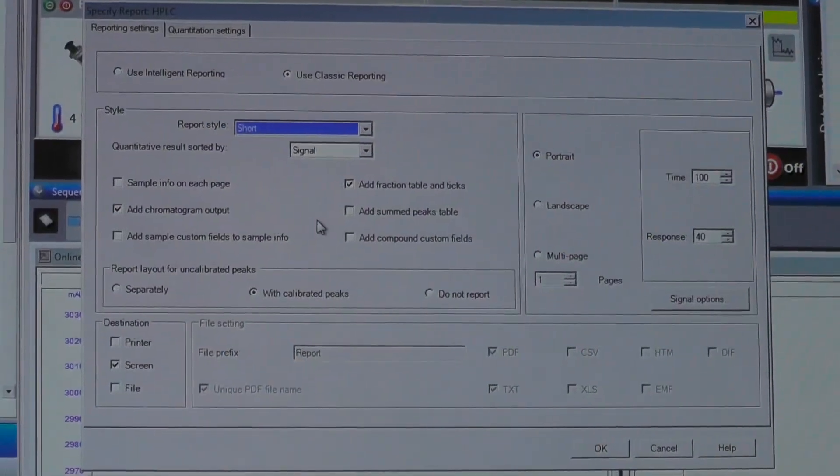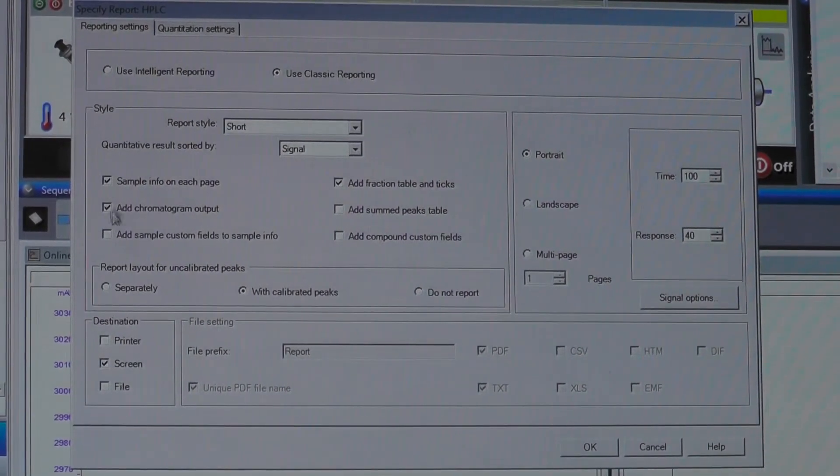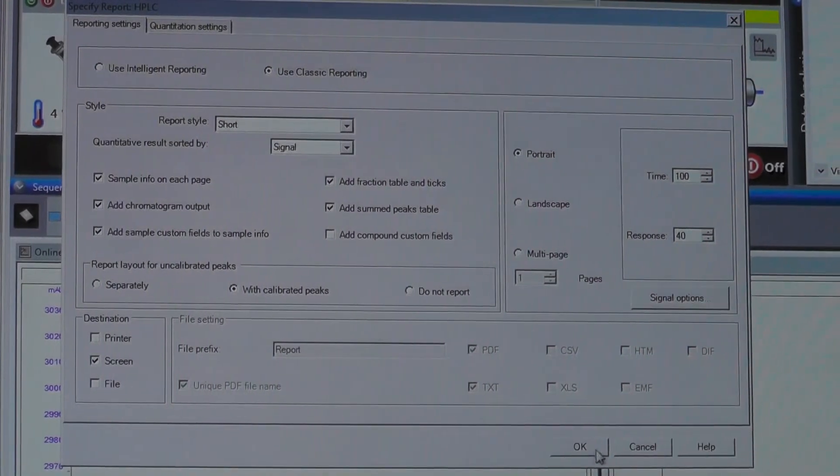Following the previous step, a Specify Report HPLC window will show up on the screen. Select the analysis that you want and click OK.